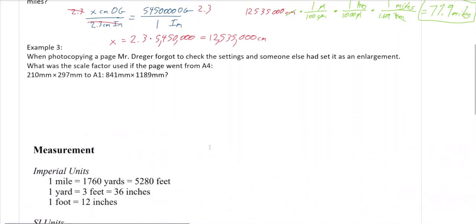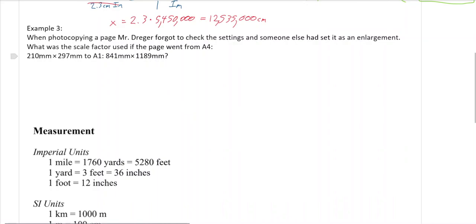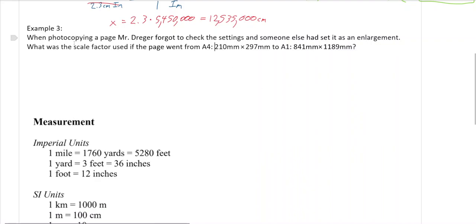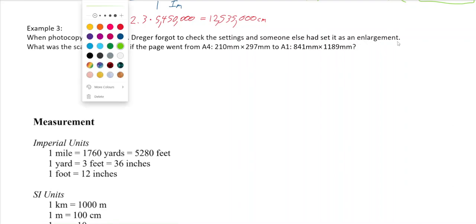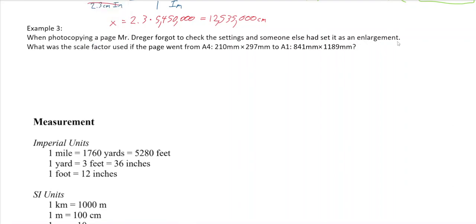You can see how unit conversion from the previous lesson connects to this one. For the last question: when photocopying a page, Mr. Drager forgot to check the settings and someone had set it to an enlargement. What scale factor was used if the page went from one size to a larger size? When we talk about scale factor, we're always talking about lengths, not area — area changes differently.